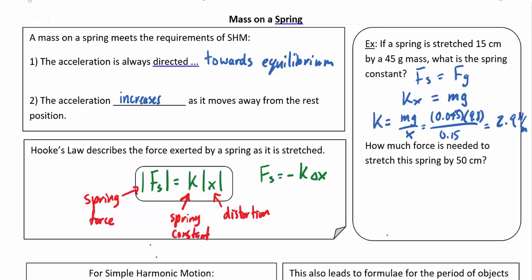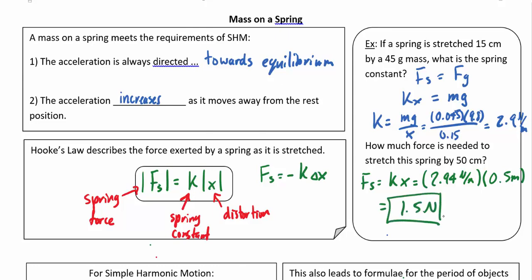If we ask how much force is needed to stretch this spring by 50 centimeters: spring force equals k times x. We know the spring constant is 2.94 newtons per meter. Multiplying by 0.5 meters, it's going to require a force of 1.5 newtons, rounded to 2 significant figures.